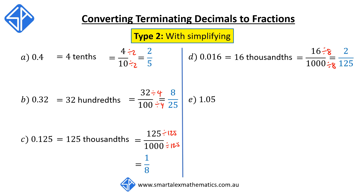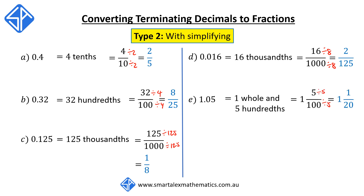Our next example is 1.05. We now have both the whole part and the fractional part. We've got one whole and 0.05, so this is read as one whole and five hundredths, giving us 1 and 5 over 100 as a fraction. The 5 over 100 can be simplified by dividing top and bottom by 5, and the final answer is one and one twentieth.